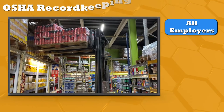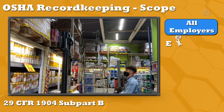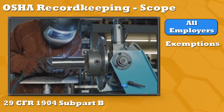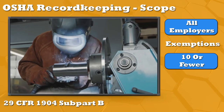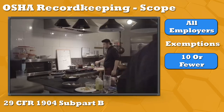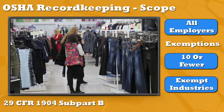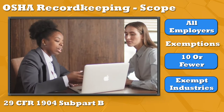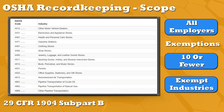The injury recordkeeping rule applies to all businesses subject to OSHA regulations, with a few partial exemptions. Businesses with 10 or fewer employees are not required to keep injury and illness records, unless specifically instructed to by OSHA. Some industries are exempt from this requirement, including many retail stores, gas stations, legal services, engineering services, and more. Refer to 29 CFR 1904 Subpart B, Appendix A, for a complete list.